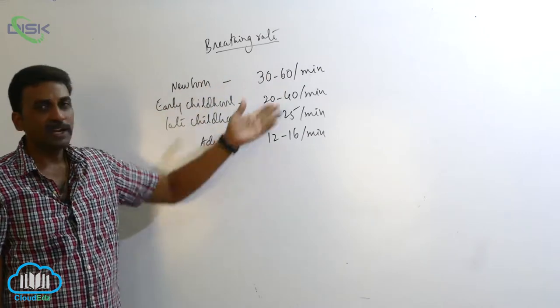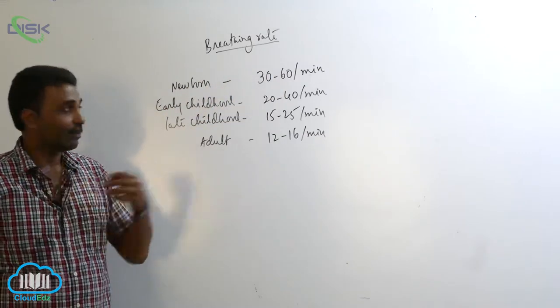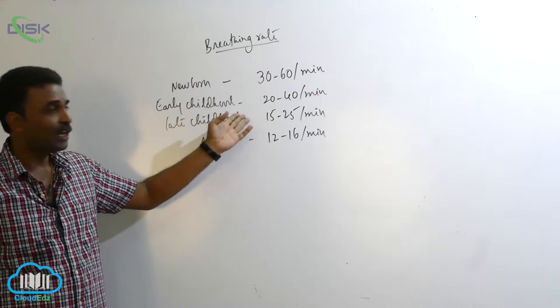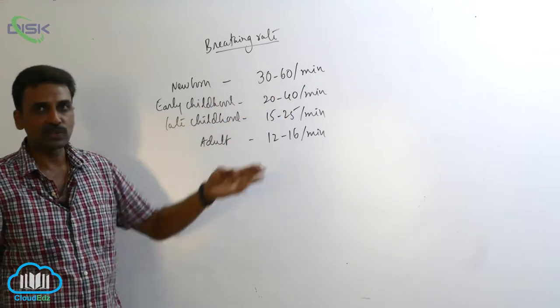In a newborn child, it is around 30 to 60 times per minute. But in early childhood, it is reduced to 20 to 40.